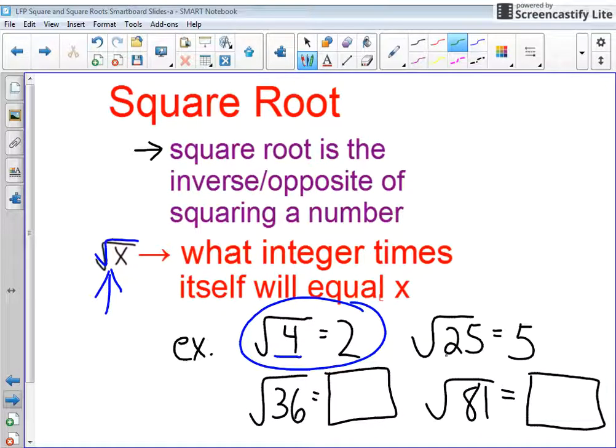Likewise, over here, the square root of 25 is equal to 5, because 5 times 5 equals 25.